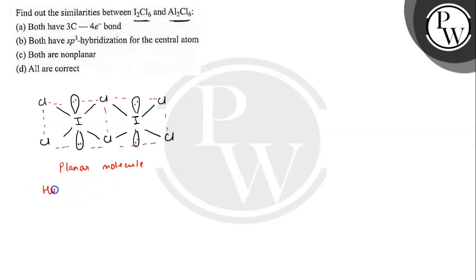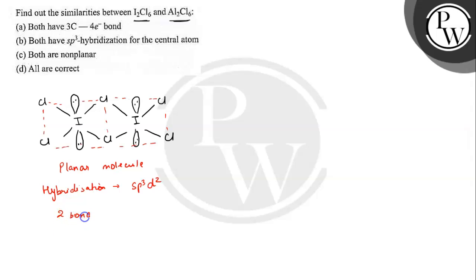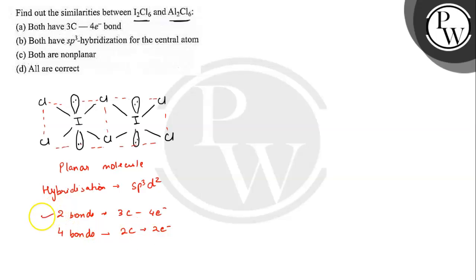If we check the hybridization, then the hybridization of this molecule will be Sp3D2. And the types of bonds present in I2Cl6 are: two bonds are three-centered four-electron bonds, and four bonds are two-centered two-electron bonds. So these are the types of bonds found in the I2Cl6 molecule.